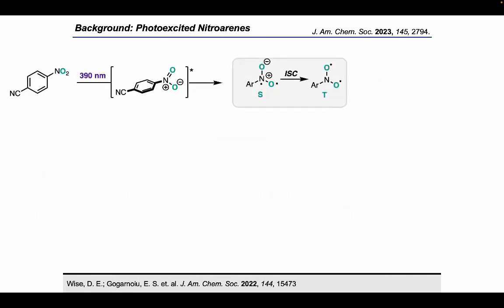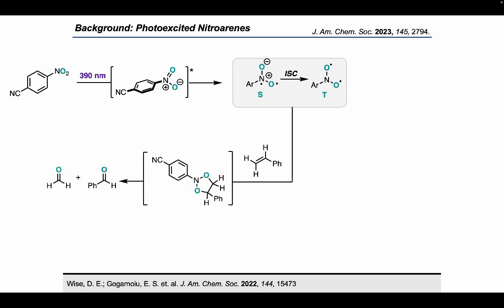Our lab has previously developed an oxygen transfer reaction using photo-excited nitroarenes for the oxidative cleavage of alkenes. In the proposed mechanism, the nitroarene is photo-excited at 390 nm to a triplet biradical excited state. This triplet biradical is then able to undergo a stepwise cycloaddition with the alkene to form a 1,3,2-dioxazolidine intermediate that, upon fragmentation, results in the cleavage products.